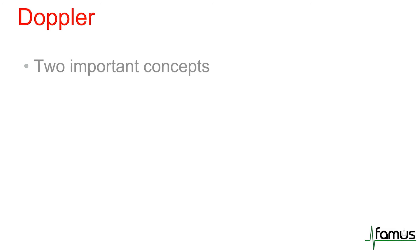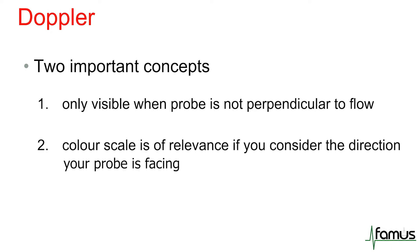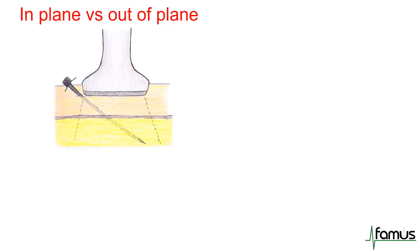To reiterate, there are two important concepts when using color Doppler. The first is that flow is only really visible when the probe is not perpendicular to the flow. The second is that the color scale is of relevance if you consider the direction your probe is facing relative to the flow. Moving on to the needling techniques: there are two typical techniques — in-plane or out-of-plane. This image represents a probe with the long axis towards you, and the needle is coming in from the side in the plane of the ultrasound beam.